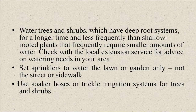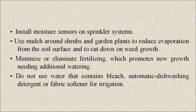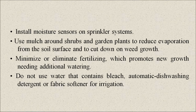Use soaker hoses or trickle irrigation systems for trees and shrubs. Install moisture sensors on sprinkler systems. Use mulch around shrubs and garden plants to reduce evaporation from the soil surface and to cut down on weed growth. Minimize or eliminate fertilizing, which promotes new growth needing additional watering. Do not use water containing bleach, automatic dishwashing detergent, or fabric softener for irrigation.